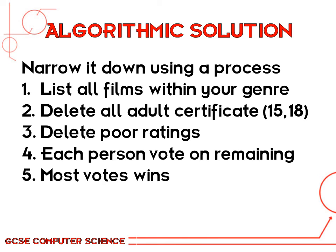Finally, if we look at an algorithmic solution, it's basically a logical solution where you break down a problem and solve it in a logical way. Imagine you're sitting with your family trying to decide on a film — you'd narrow it down using a particular process, which could form an algorithmic solution. First, go to the genre you all want to watch and list all the films within that genre, narrowing it down to maybe 20 movies. Then remove all the films with adult certificates — 15s or 18s that you can't watch with little kids. Now maybe you've got five or six films left. Delete the ones with really poor ratings — one or two stars, get rid of them. Now you're left with three films. Each family member votes on which one they want to watch, and the film with the most votes wins. It's a logical solution to the problem.